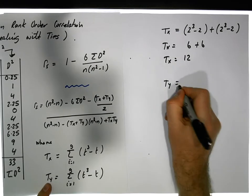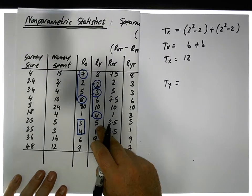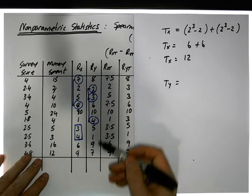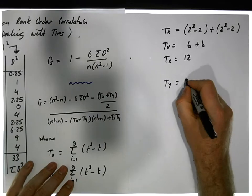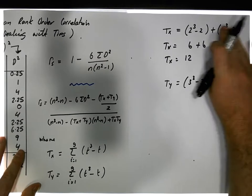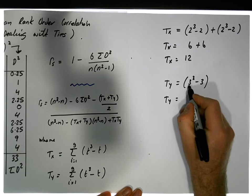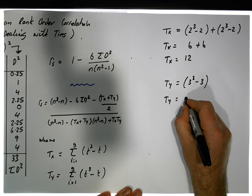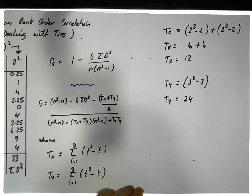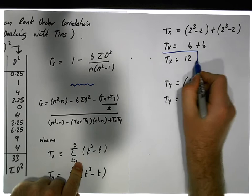For T(y): there is only one group of ties in Y, so there's only one term to calculate. The important thing is there are 3 values in this group, so it's 3³ − 3. There's only one group, so no second term. T(y) = 27 − 3 = 24.